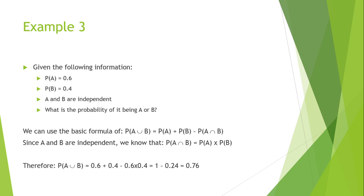Example 3: the only difference from the previous example is that A and B are now independent. We again want the probability of A or B. Since A and B are independent, probability of A and B equals probability of A times probability of B. Therefore, probability of A or B equals 0.6 plus 0.4 less 0.6 times 0.4, which gives an answer of 0.76.